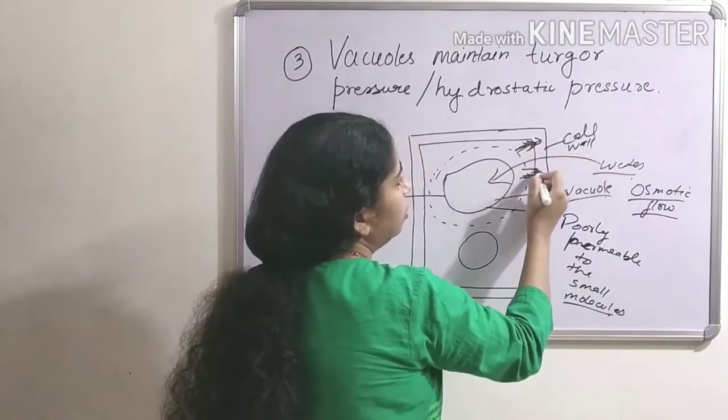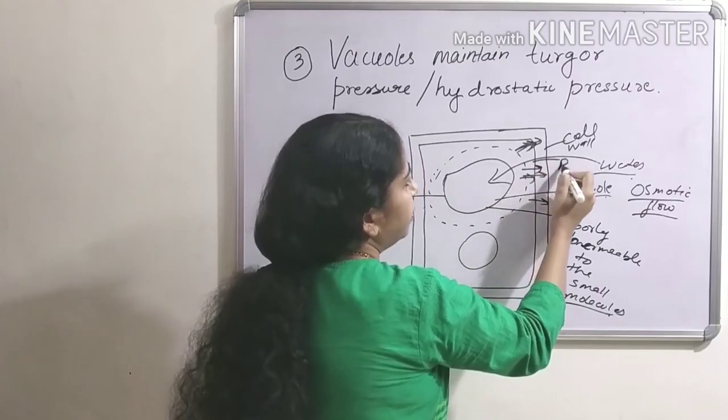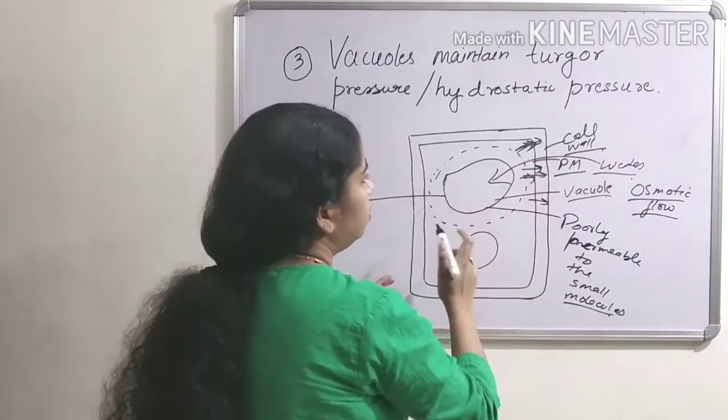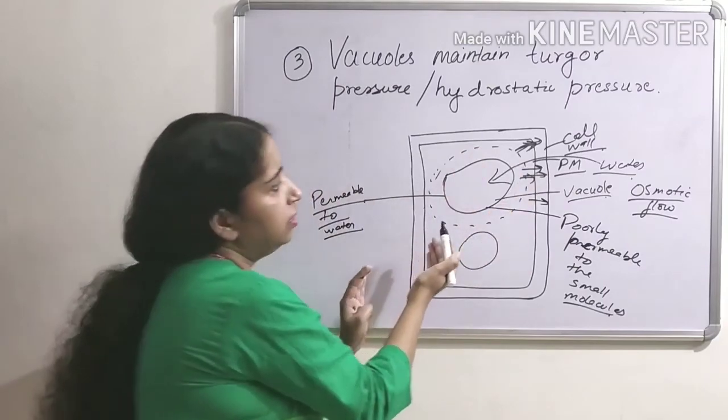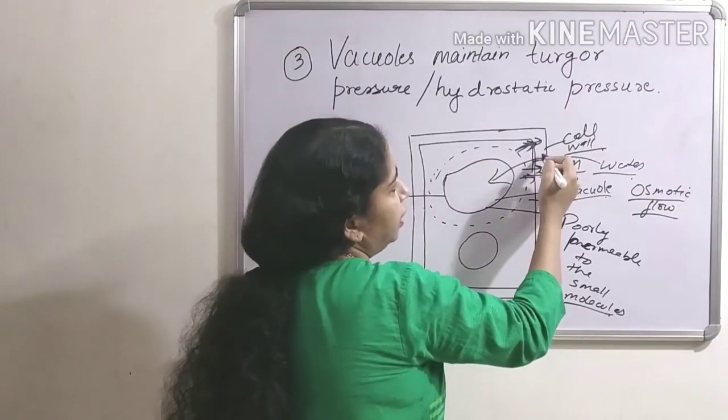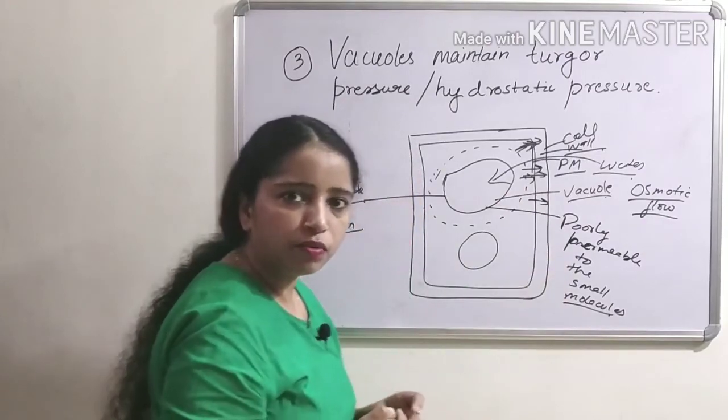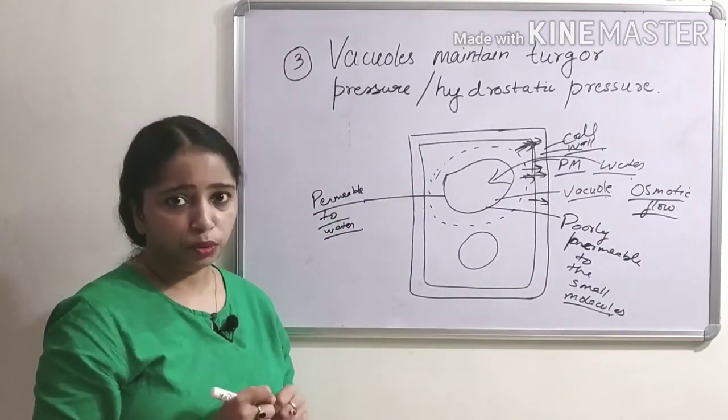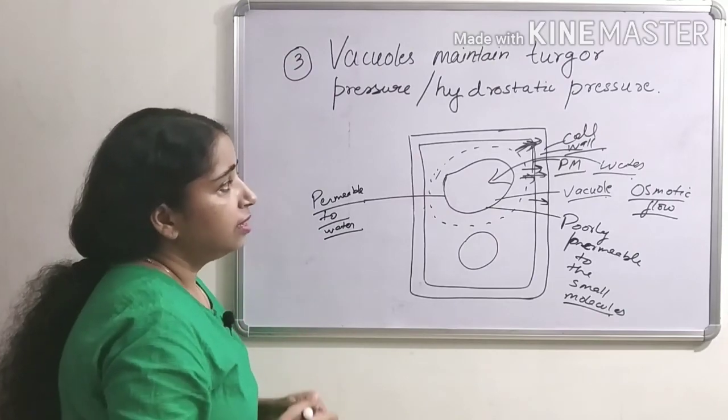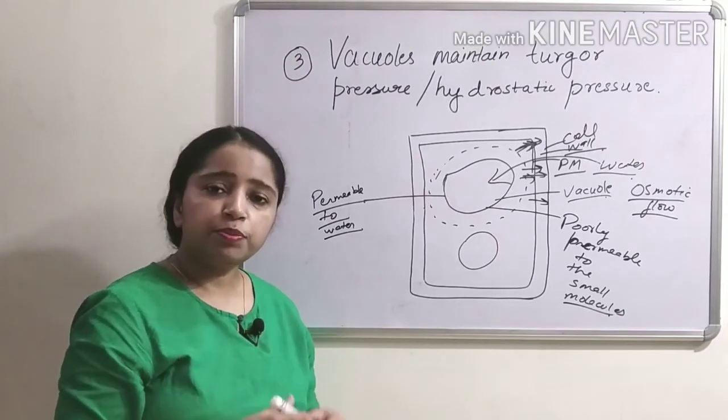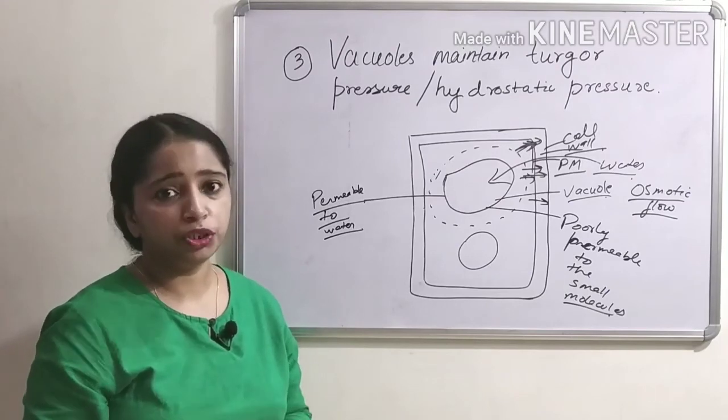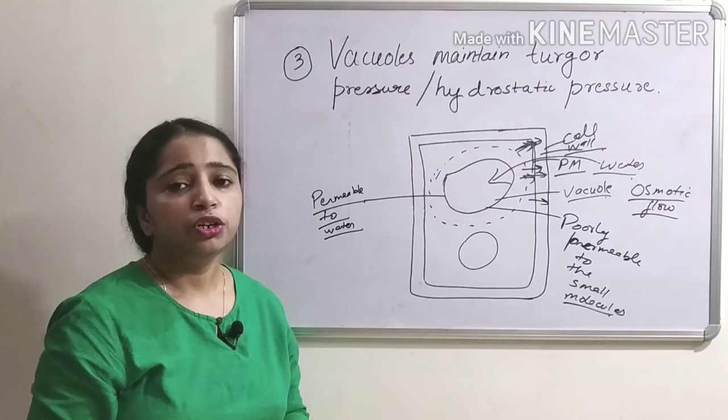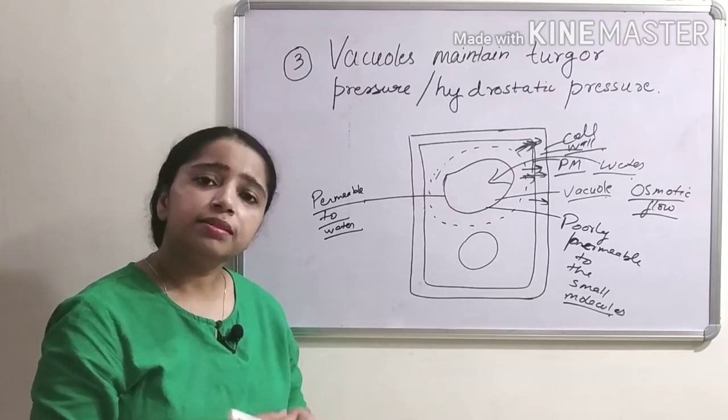This pressure pushes the plasma membrane against the interior of the cell wall, and this makes the cell rigid. This provides mechanical strength to the soft tissues of the plant and also helps in cell growth due to stretching of the cell wall.